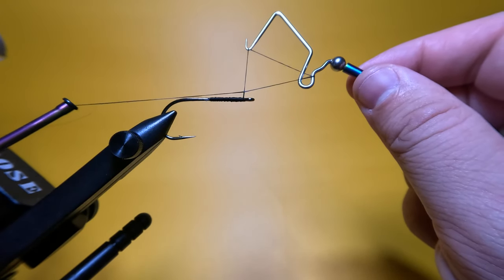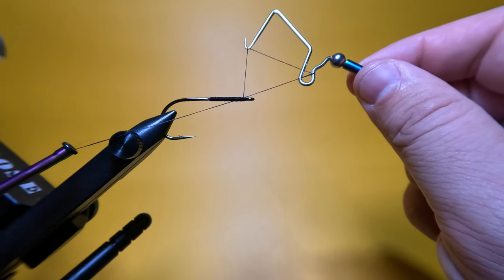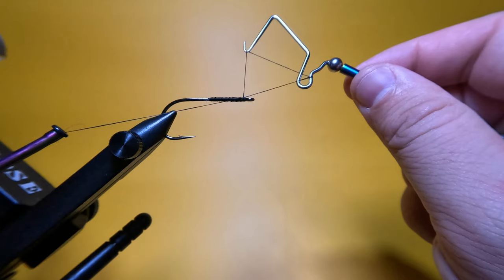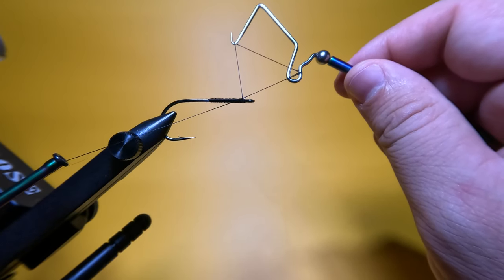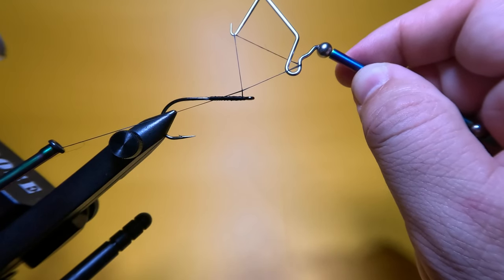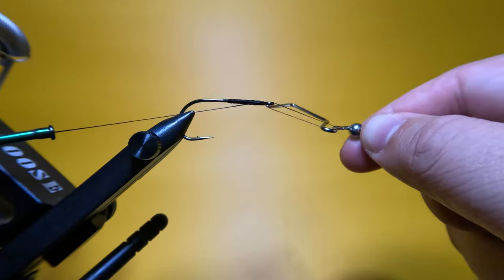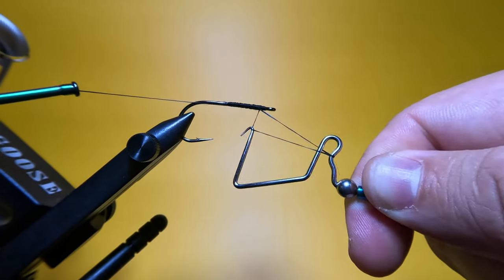And now we're ready to go ahead and perform our wraps. And I'd say 4 wraps is a good standard minimum, but you may do more or slightly less, depending on the situation and the materials that you're tying in. For the purposes of the demonstration, I'm going to do 4 wraps. So now I'm holding the shaft of my whip finisher, which will allow it to rotate freely. So I'm just going to rotate the tool around the shaft of the hook 4 times.